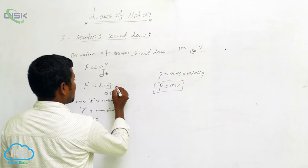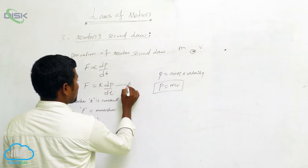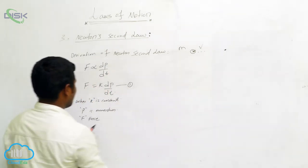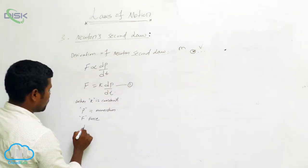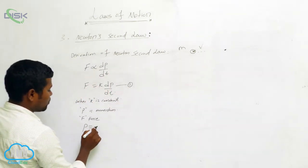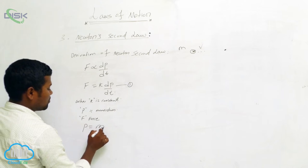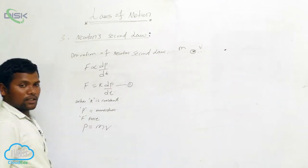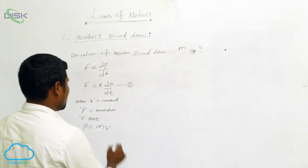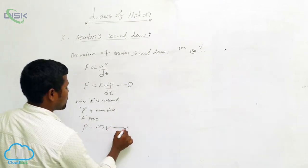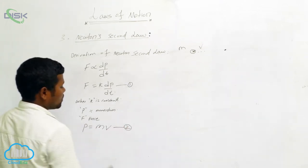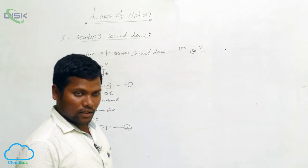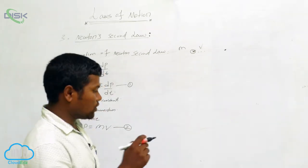Momentum p is equal to mass into velocity, so p equals mv. Let us call this equation number one. Now you understand momentum means mass into velocity, and this is equation number two.